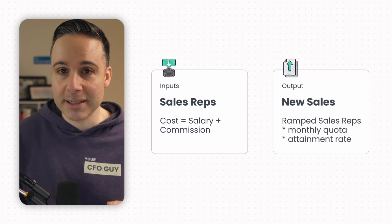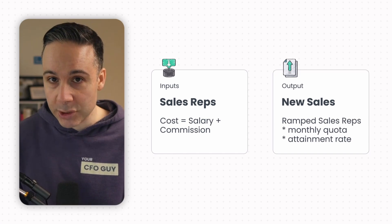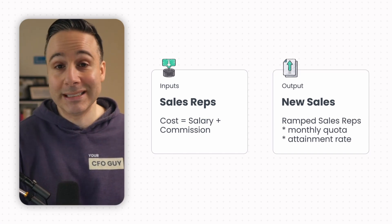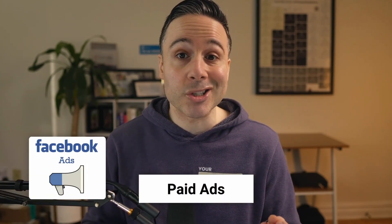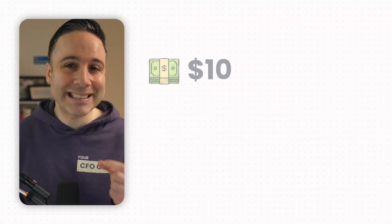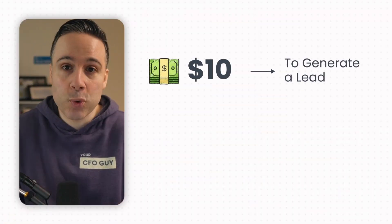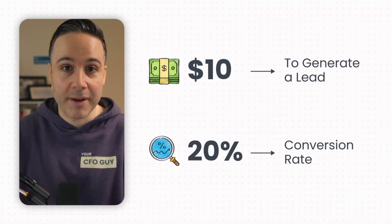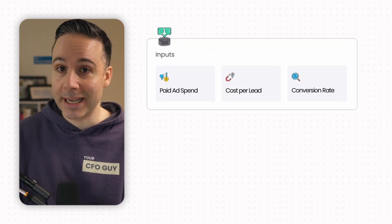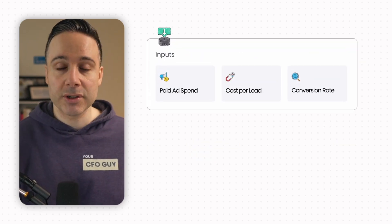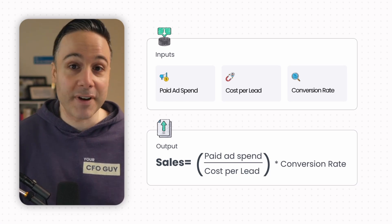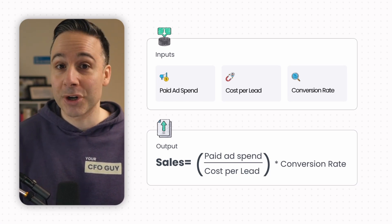To get to new sales, I take the number of ramped sales reps times a monthly quota times the attainment rate. I also oftentimes deal with e-commerce businesses where they'll heavily invest in paid ads, like Facebook ads or Google ads. If you know it takes $10 to generate a lead and 20% convert, then you have your formula. So inputs: paid ad spend, cost per click, and conversion rate. To get to sales, you take paid ad spend divided by cost per lead, times your conversion rate.